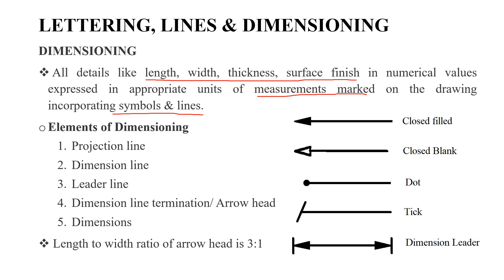The elements of dimensioning are: first, the projection line; second, the dimension line; third, the leader line; fourth, the arrowhead; and fifth, the dimension value itself. We also consider the length-to-width ratio of the arrowhead.